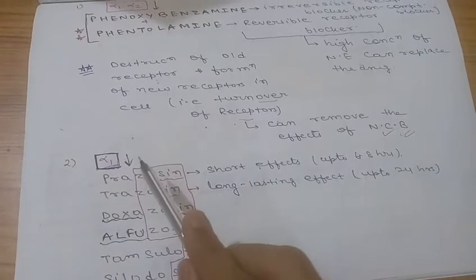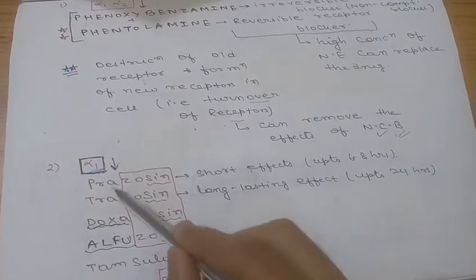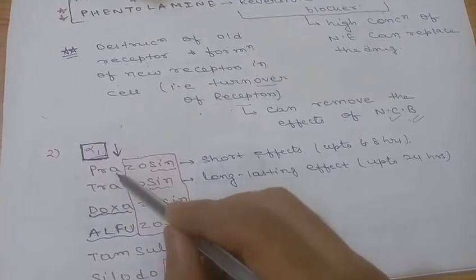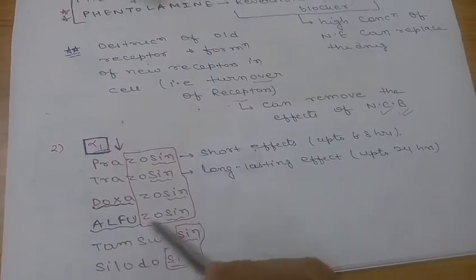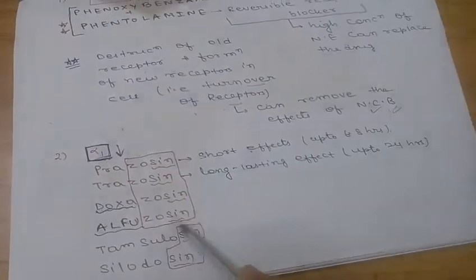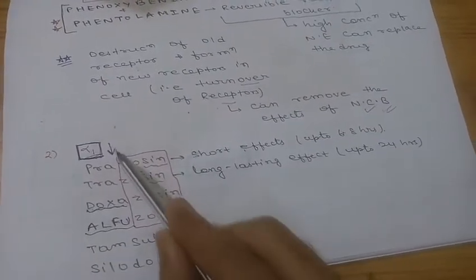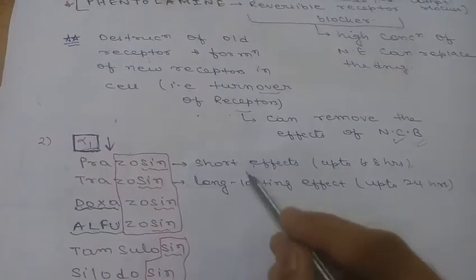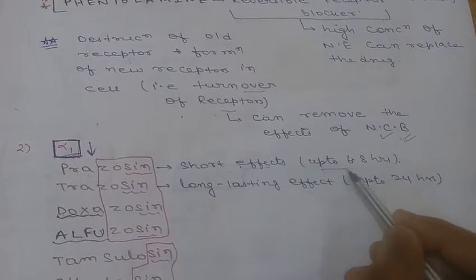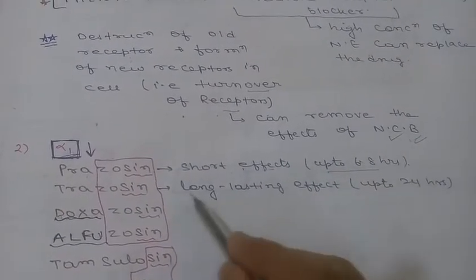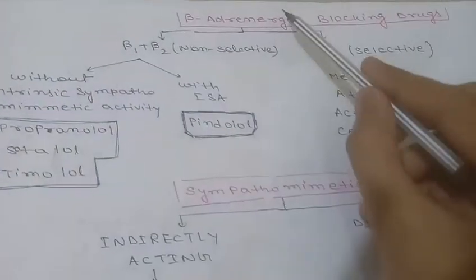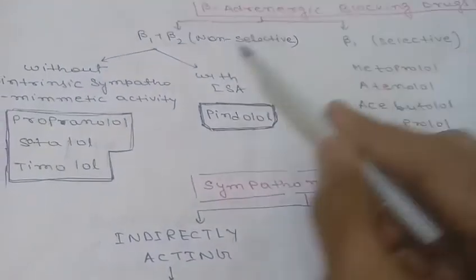Drugs targeting specifically alpha-1 receptors are: prazosin, doxazosin, alfuzosin, tamsulosin — you can remember the suffix '-osin.' Prazosin has a short duration of effect, up to six to eight hours, whereas terazosin has a long-lasting effect of up to twenty-four hours.